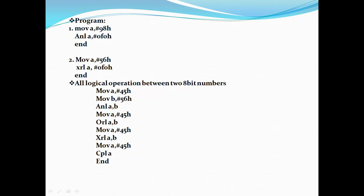In assembly language, the program is: MOV A, #98h to load the first number into A, then ANL A, #0F0h to perform AND logic. Note that if any value starts with a letter (like F), you need to write a 0 before it so it is treated as a hexadecimal number and not a regular character. For the XOR operation, load the value into A and apply XRL A, #0F0h.